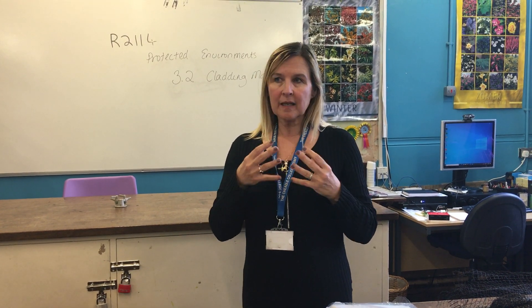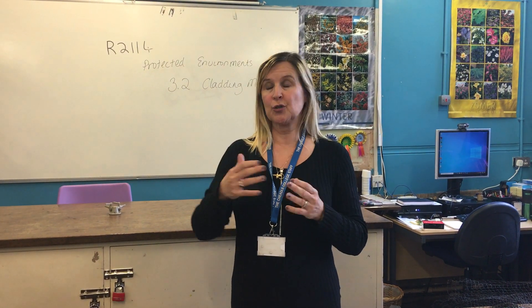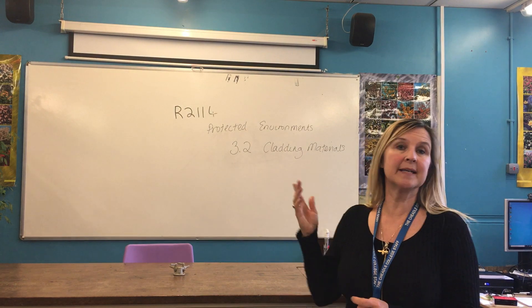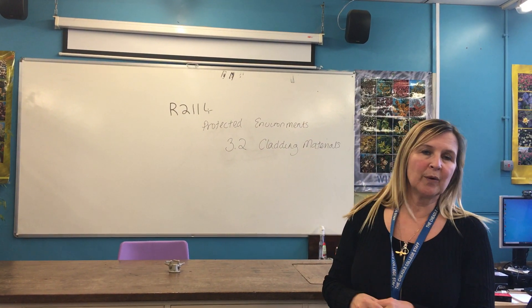We're going to have a look at different materials used for cladding in growing environments under protection. This includes cladding materials — so what do we mean by cladding materials? For protected structures such as greenhouses, cloches, cold frames, we have our framework which is usually wood, aluminium or steel. Anything that covers that framework is called cladding. In the syllabus we have some names of cladding materials you need to be familiar with and evaluate according to certain physical characteristics. We're on theory module R2114, the protected environment, section 3.2: cladding materials.